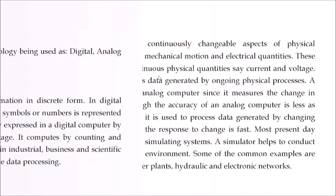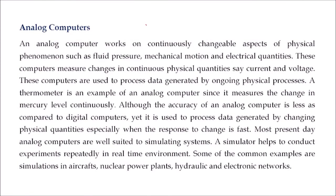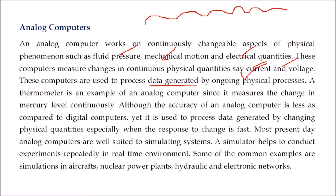Analog computers are used when phenomena are continuously changing — like pressure, mechanical motion, and electrical quantities. When you have to deal with continuous signals such as current or voltage, these computers are known as analog computers. They are used to process data generated by ongoing physical processes. For example, a thermometer measures continuous changes in mercury level. The accuracy of analog computers is less than digital, but when dealing with physical quantities that are continuously changing, we need analog computers. Most present-day analog computers are very suited for simulating systems — this simulation helps conduct experiments that are repeatedly held up, such as for aircraft, nuclear power plants, hydraulics, or electronic networks.